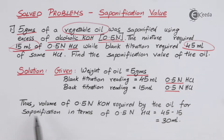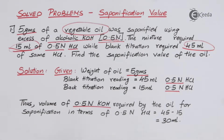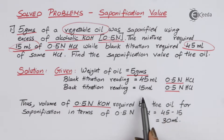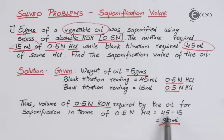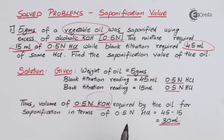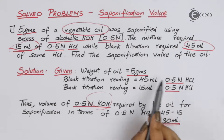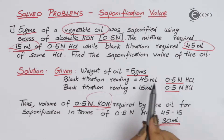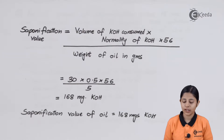The volume of 0.5 N KOH required by the oil for saponification, expressed in terms of 0.5 N HCl, is what we need to figure out. We subtract: 45 minus 15 equals 30 ml. The quantity of KOH is not directly mentioned in the question, but we can find it from the two titration readings — 45 minus 15 gives us 30 ml of KOH consumed.